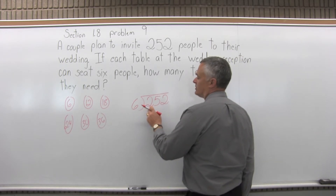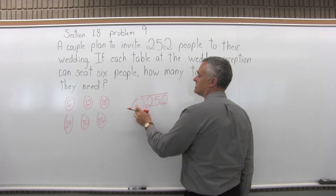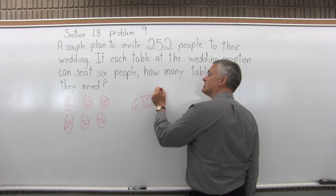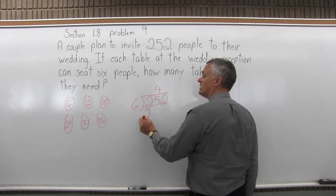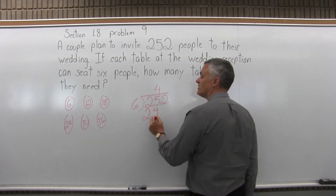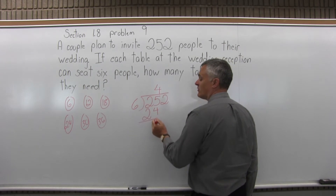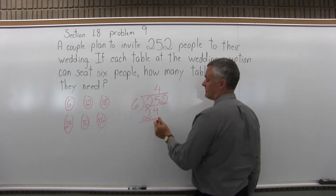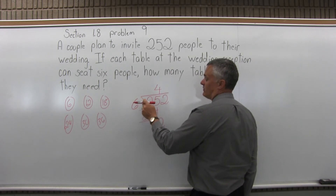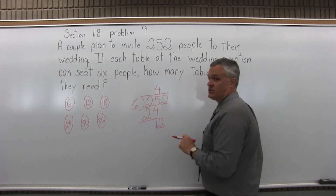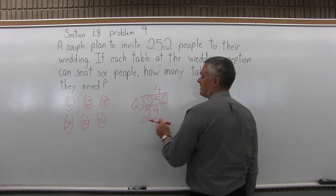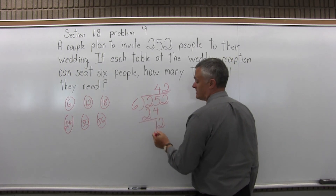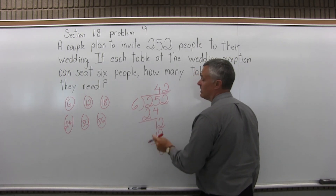6 won't fit into 2, so we'll go to the next digit. How many times will 6 fit into 25? 4 is as close as we're going to get. 6 times 4 is 24. I write that under the 25 and subtract — 25 minus 24 is 1. I'll bring down the next digit, the 2, making it 12. 6 will fit into 12 twice. 2 times 6 is 12, so it fits in evenly with no remainder.